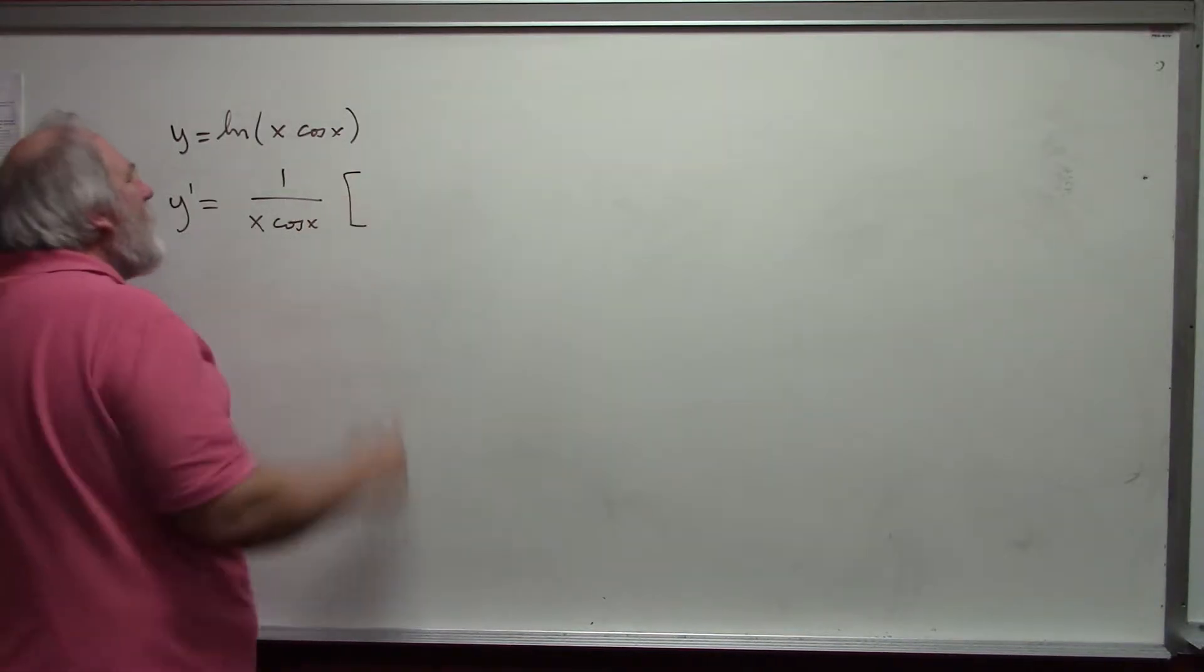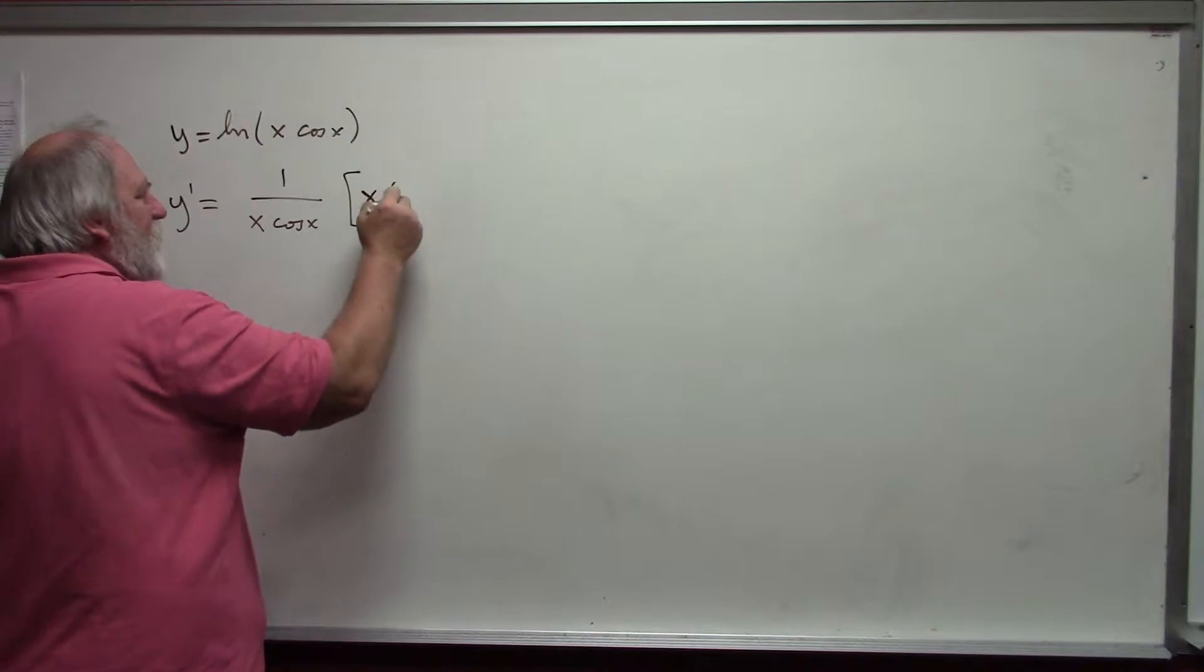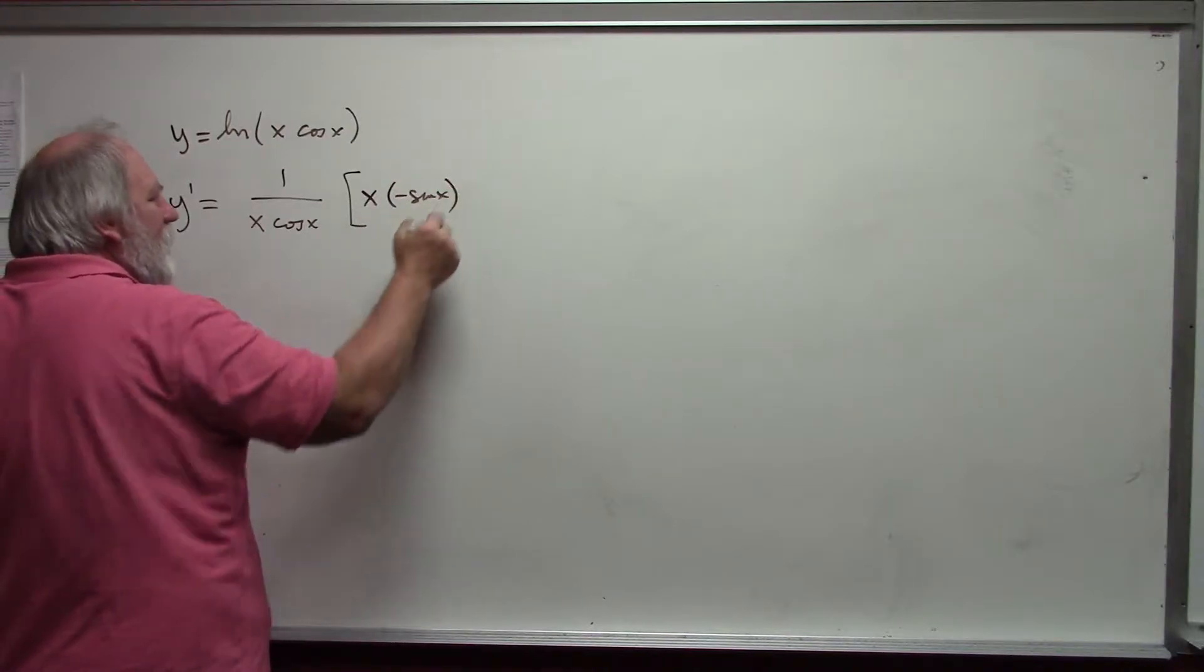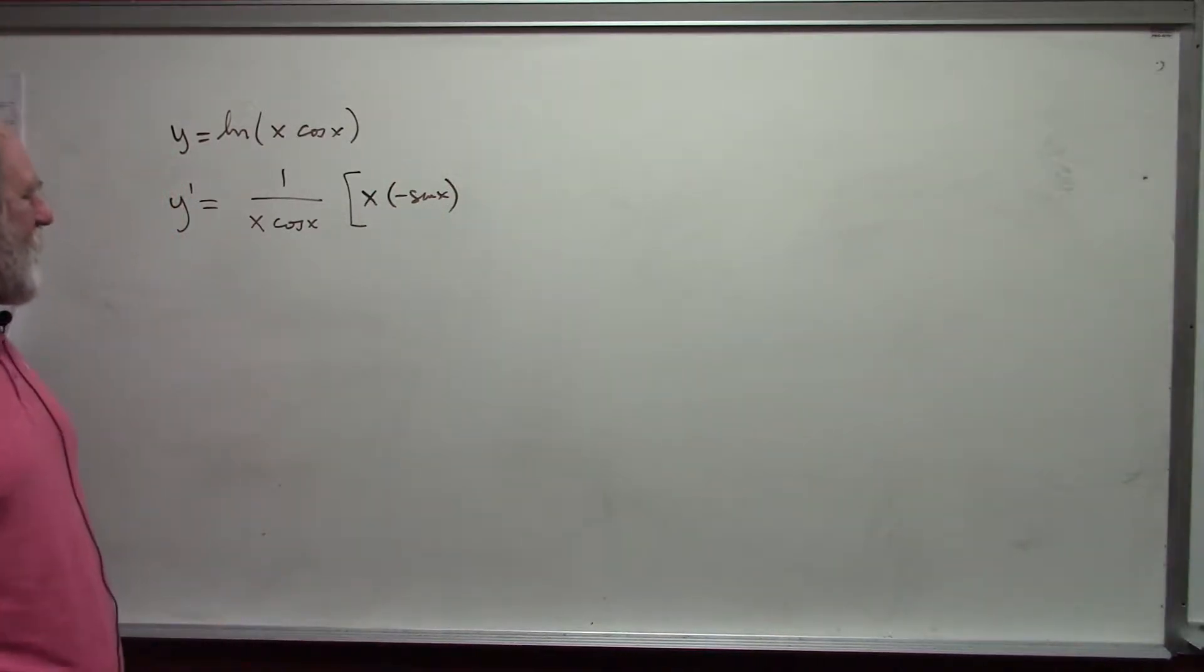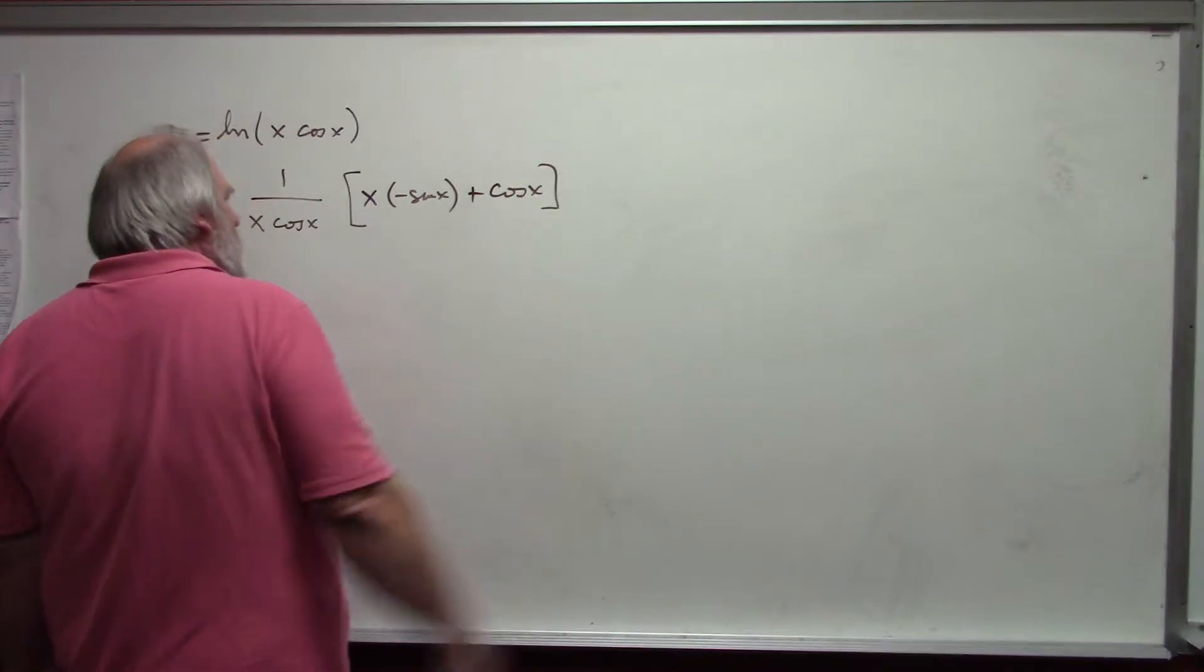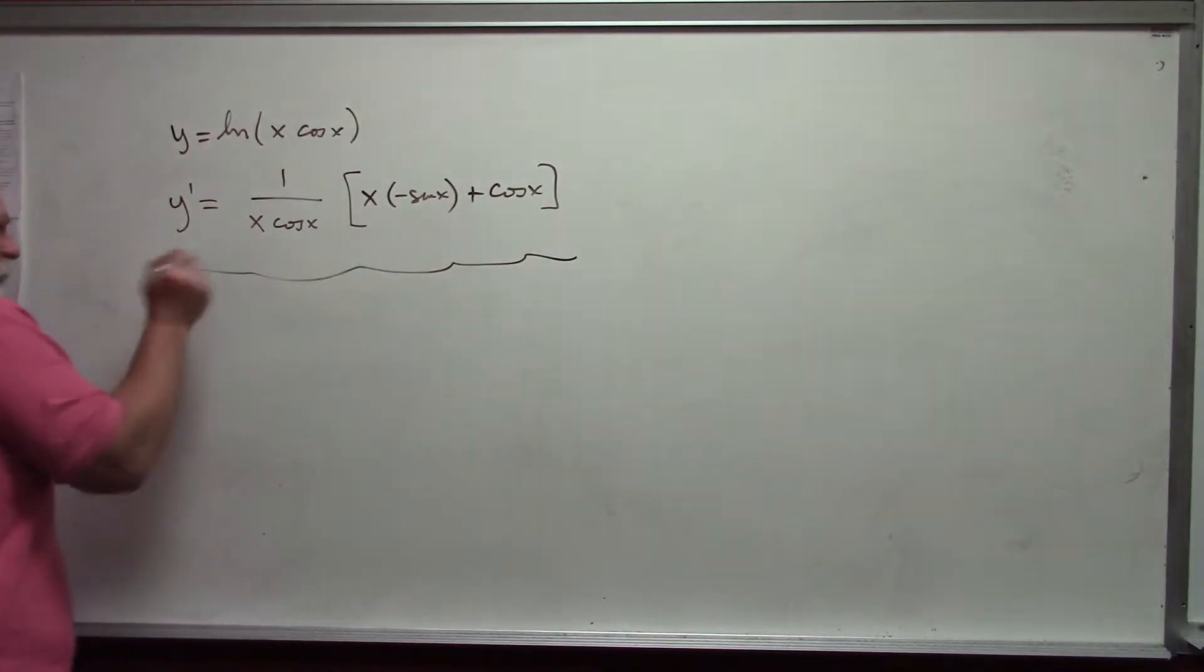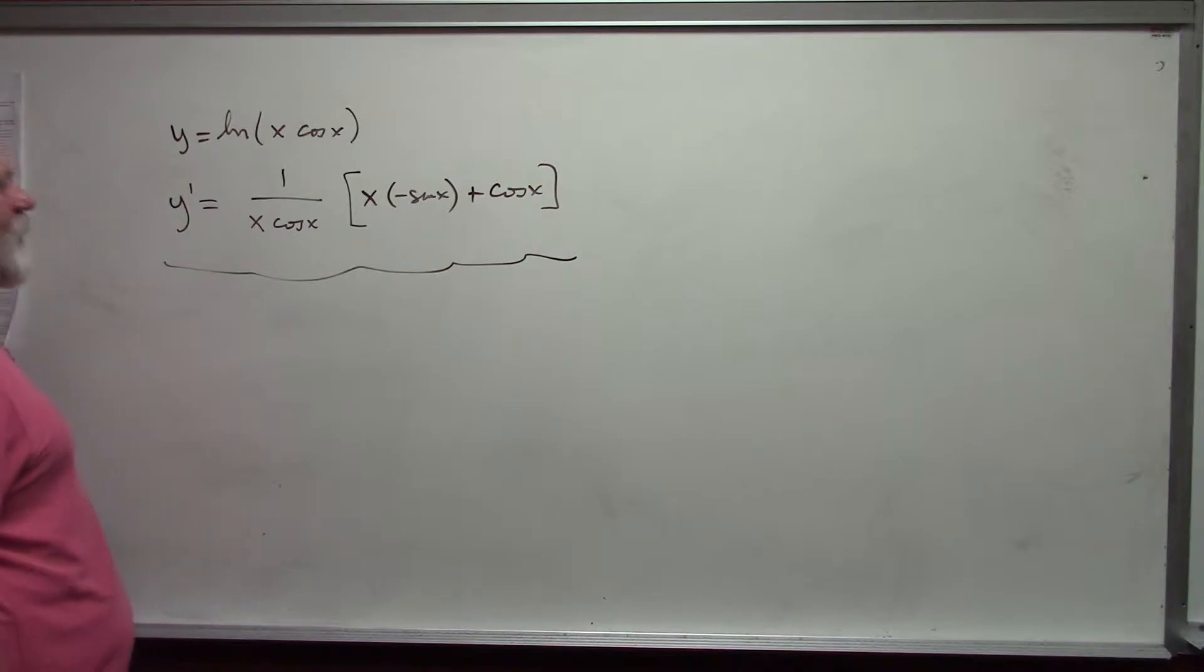First times the derivative of the second. Make sure you put parenthesis around that. Otherwise, it looks like minus plus the second of the derivative of the first. And if I didn't want to simplify it, I can leave it like that.